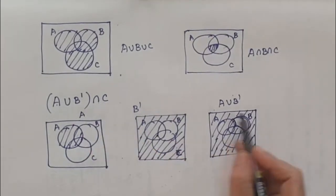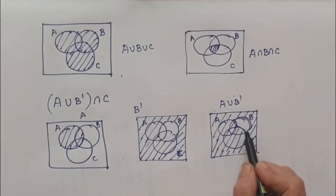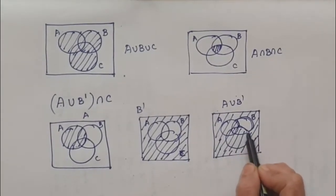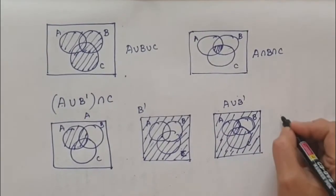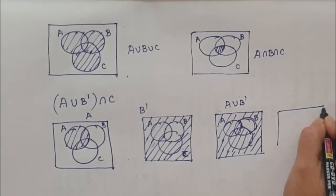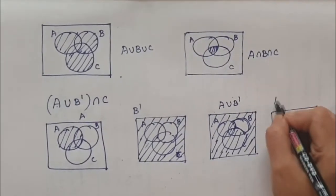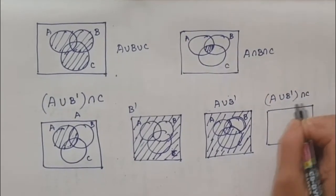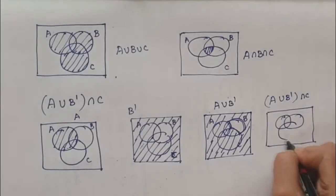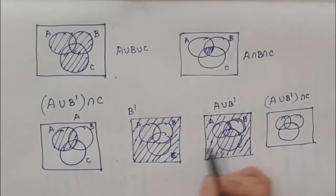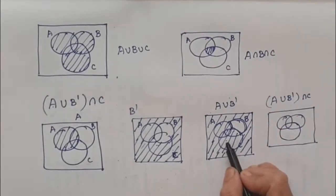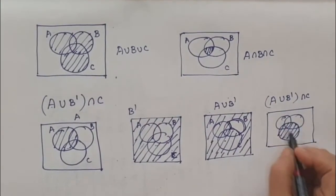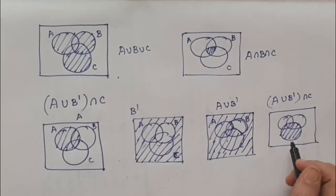Now we need to intersect it with C. Where is the common region with C in this diagram? When we intersect it with C, it is only C. So we have our last diagram as A union B complement intersection C — this will be the answer. So it is always better to do it part by part so that you do not go wrong.